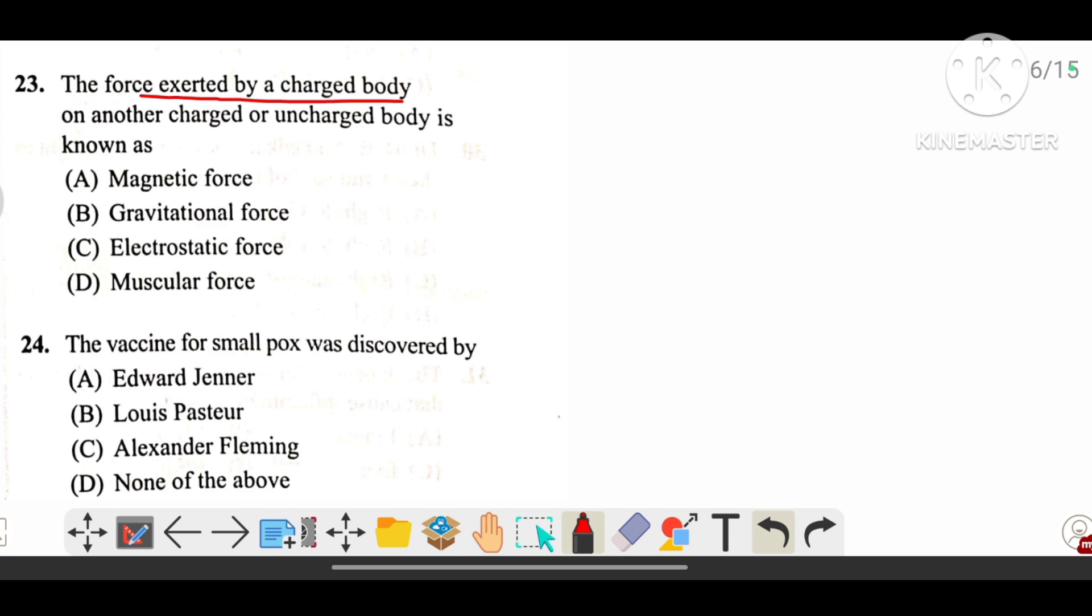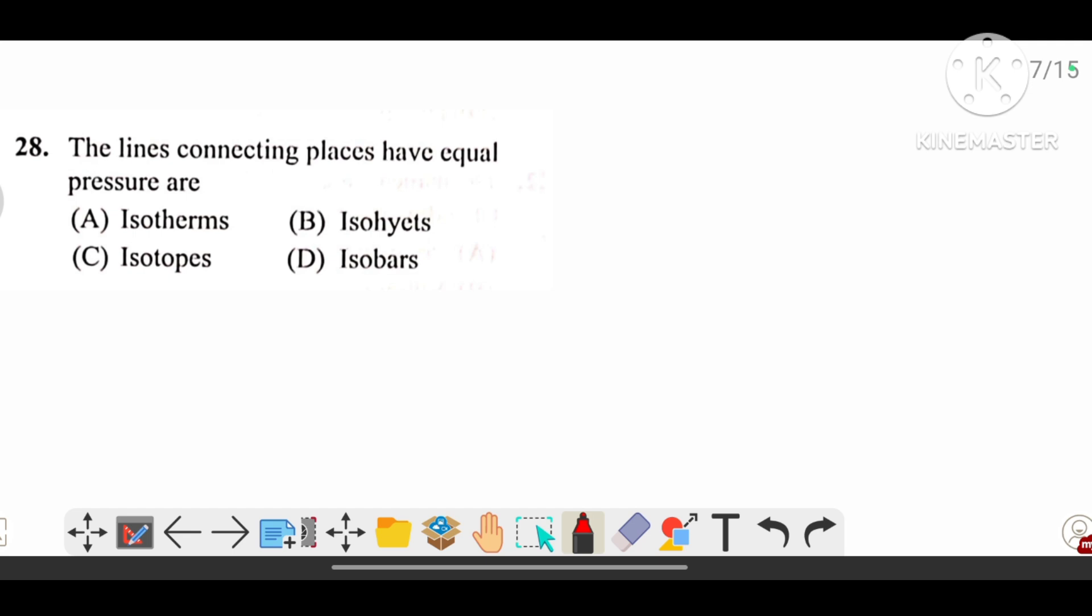The force exerted by a charged body on other charged or uncharged body is known as—the options are magnetic, gravitational, electrostatic, muscular. The answer is C, that is electrostatic. The vaccine for smallpox was discovered by Edward Jenner.